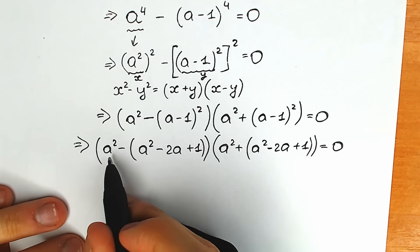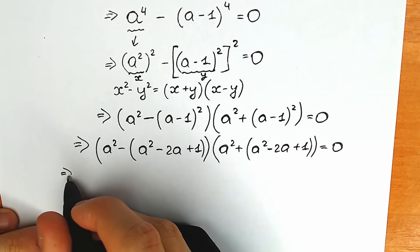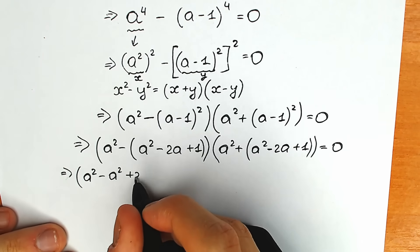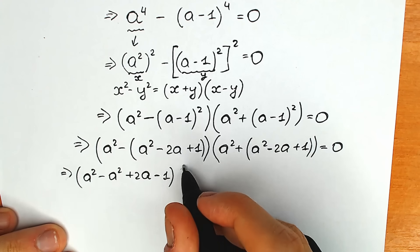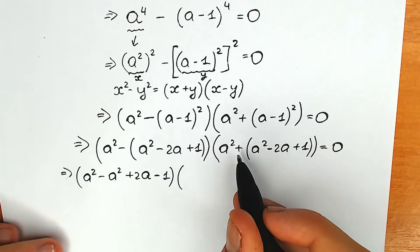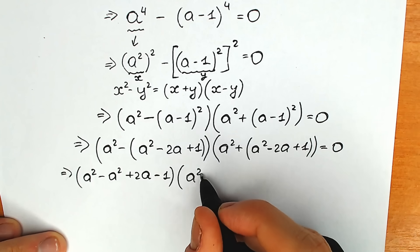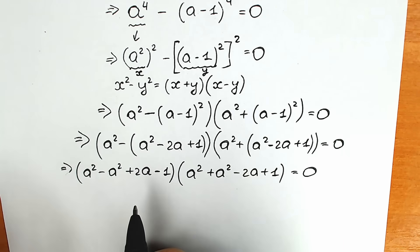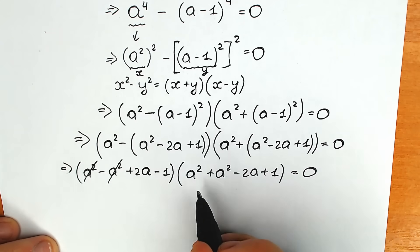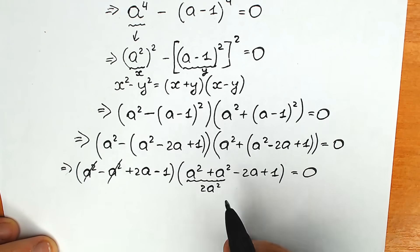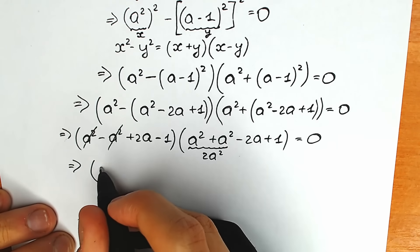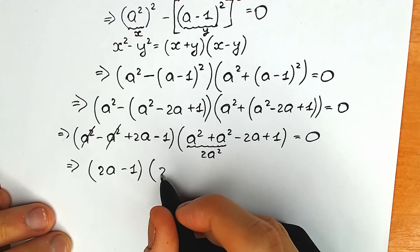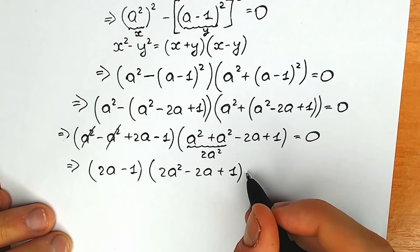Now let's simplify. Opening the first parenthesis — we change all signs inside — gives us: a² minus a² plus 2a minus one. In the second parenthesis, since we have addition, we keep the signs: a² plus a² minus 2a plus one, equal to zero. The a² terms cancel in the first parenthesis, and in the second we add a² plus a² to get 2a². This gives us the product: (2a minus one) times (2a² minus 2a plus one) equal to zero.